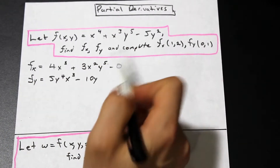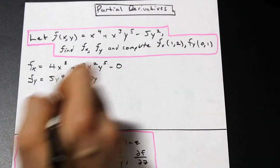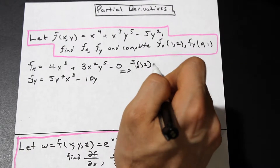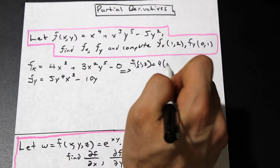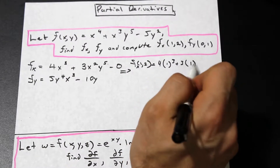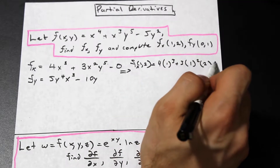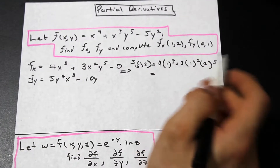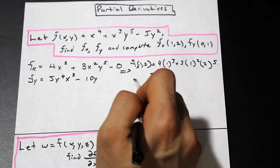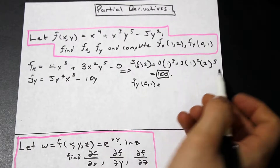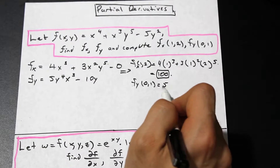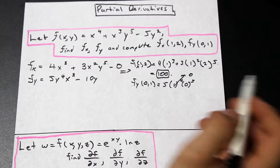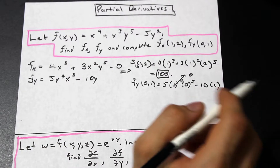The question also asks us to compute the partial derivative at a point. For f sub x at x equals 1, y equals 2: we plug in — 1 cubed plus 3 times 1 squared times 2 to the fifth — and that equals 100. For f sub y evaluated at x equals 0, y equals 1: we have 5 times 1 to the fourth times 0 cubed — that term is zero — minus 10 times 1, giving negative 10.